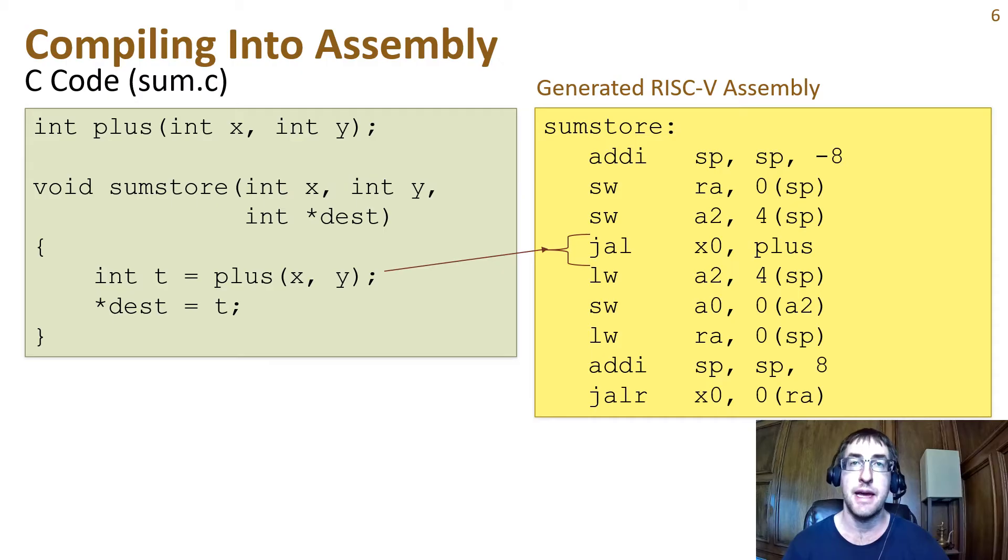The next instruction is jumping and linking to the plus function. This is how a procedure call is made. Stay tuned for part four of this series to learn more about procedure calls. The next few instructions are loading the value from the A2 argument and storing the return value from the plus call into the location pointed to by dest. Finally, the last three instructions are going to return from this procedure. We're going to load the return value from the stack, add eight bytes back to the stack, and return to the calling function.